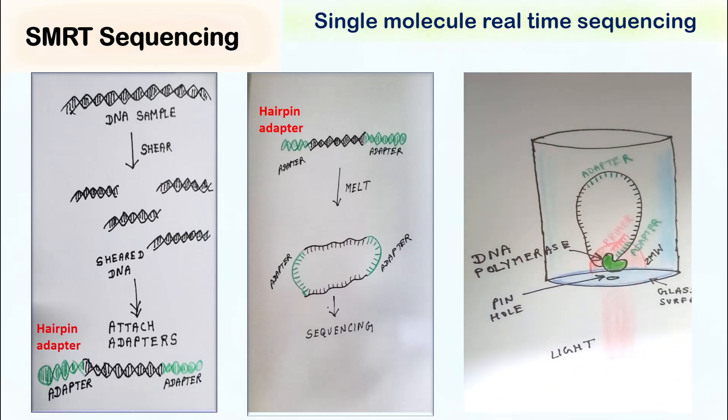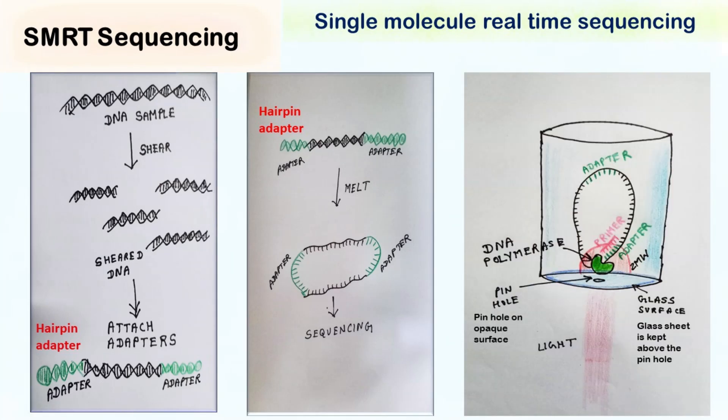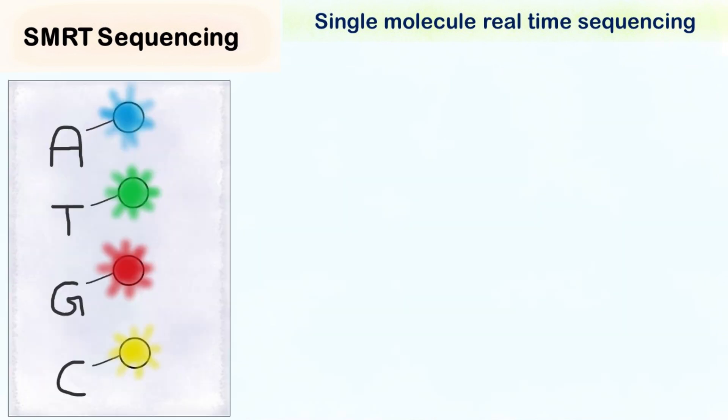In presence of primer, the DNA polymerase starts adding nucleotides on the template DNA. Each of the nucleotides are labeled with fluorescent dye of different color.